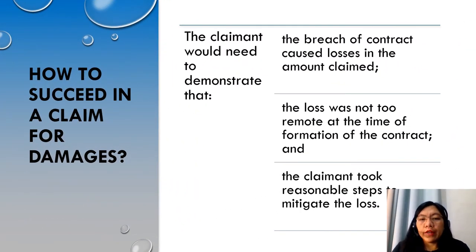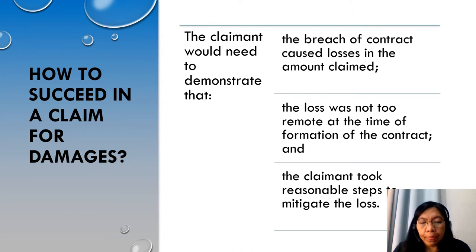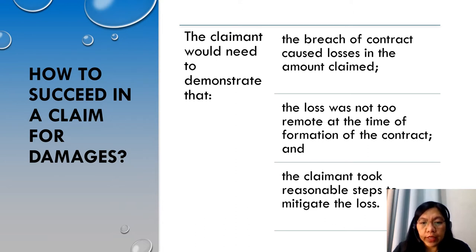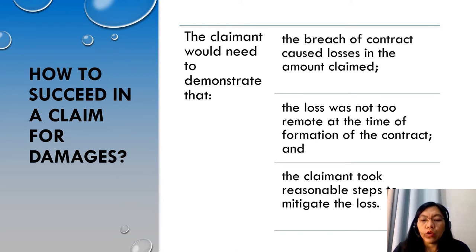Now that we know the differences between liquidated and unliquidated damages, the next question is how to succeed in a claim for damages. According to the principles of the law of contract, to succeed in a claim, the claimant would need to demonstrate the following: first, the breach of contract caused losses in the amount claimed; second, the loss was not too remote at the time of formation of the contract; and the claimant took reasonable steps to mitigate the loss. We will discuss all three in more detail in the next slides.